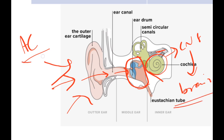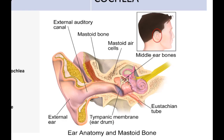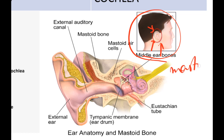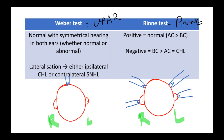In bone conduction, the sound is transmitted through part of the skull bones — usually the mastoid bone, which is right behind the ear. That is what we are going to test in Rinne's test.